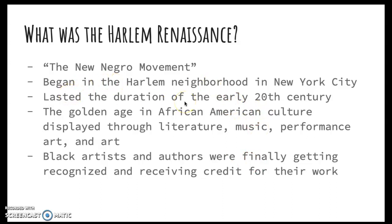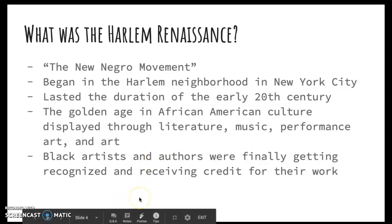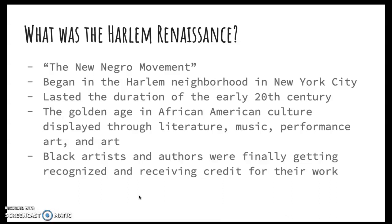It took place in the early 20th century and lasted basically the duration of the 20th century. It began in the Harlem neighborhood in New York City — that's where it got its name. Harlem is really noted for being a black neighborhood, which is where we get a lot of African-American culture. It's considered the golden age in African-American culture, displayed through literature, music, performance, and art. It was a time where black artists and authors were finally getting recognized and receiving credit for their work. Langston Hughes really thrived in this environment, and this is when he was officially recognized as a prominent literary figure, which is why we're still reading him today.